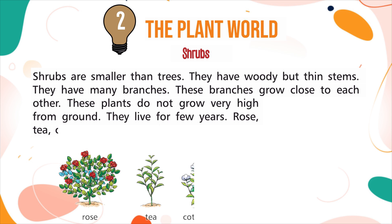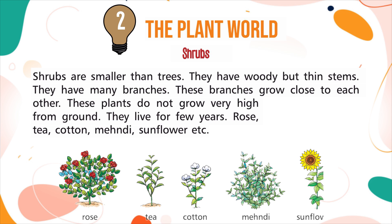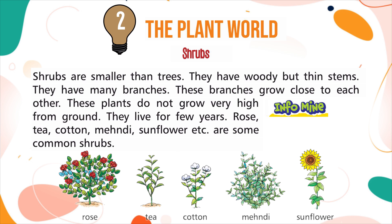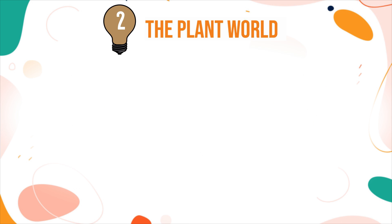Rose, tea, cotton, mehendi, sunflower, etc. are some common shrubs. Inform mind: Sunflower is one of the fastest growing plants.